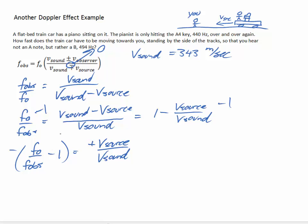So we're going to subtract 1 from both sides. So we have F0 over F_observed minus 1 is equal to negative V_source over V_sound.